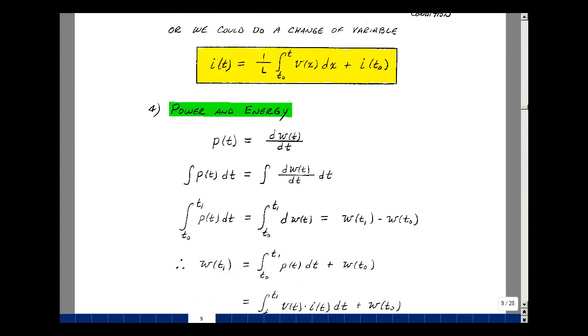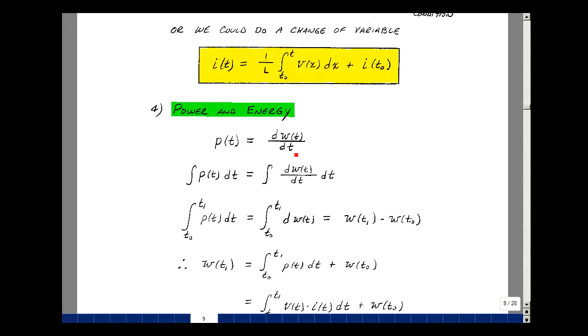Let's next take a look at power and energy. Power is the derivative of energy with respect to time. Solve for the energy absorbed by an inductance. Integrate both sides of the equation dt, evaluate that from t0 to t1. The dt's cancel. I get the integral of 1 dW of t, which is the energy at time t1 minus the energy at time t0. To solve for this, I'll put this on the other side of the equation: the integral of power dt plus an initial condition.